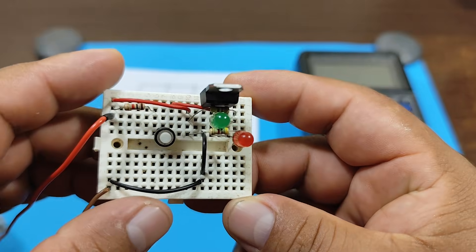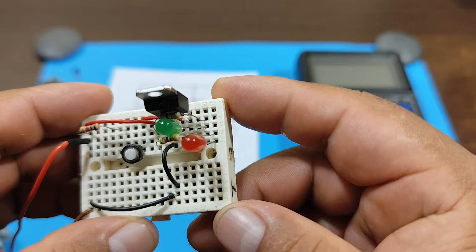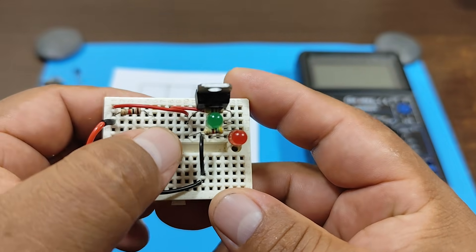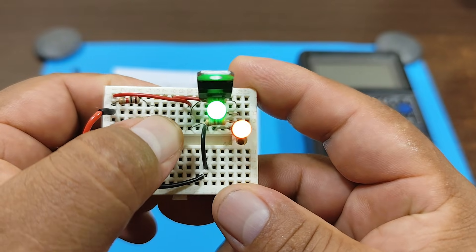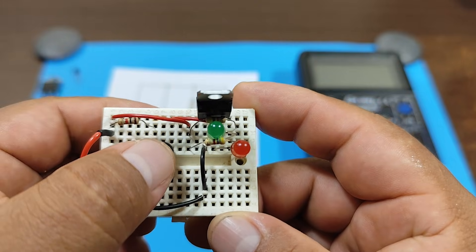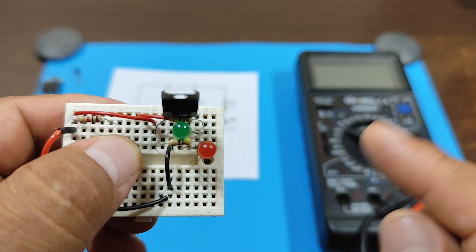Here we have the assembled circuit, in which we have a triac connected. Now let's see if both LEDs light up. As you can see, both LEDs light up. That means the triac is allowing both half cycles of the alternating current to pass through.